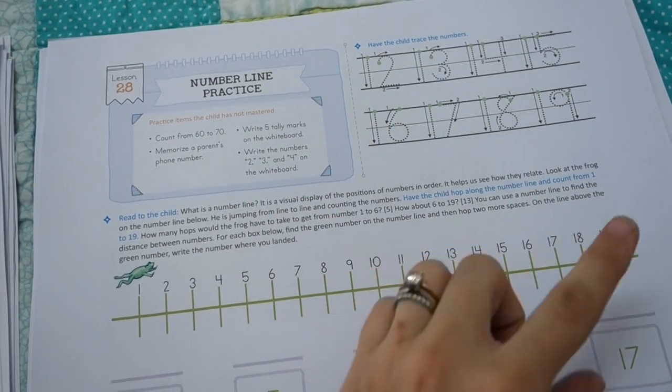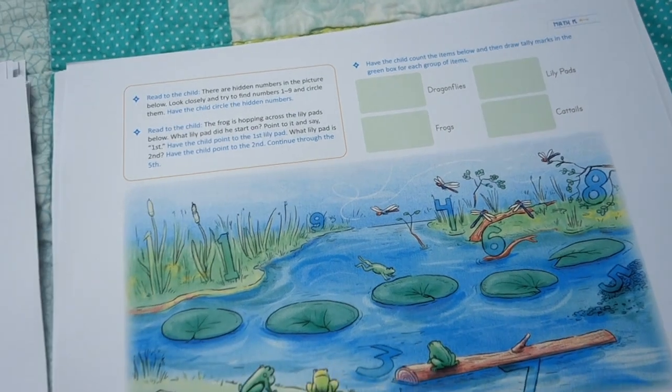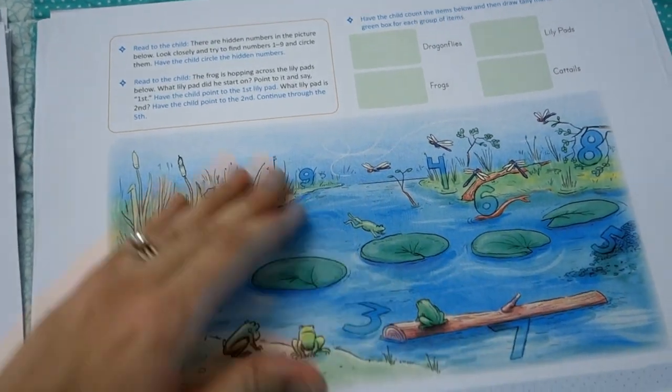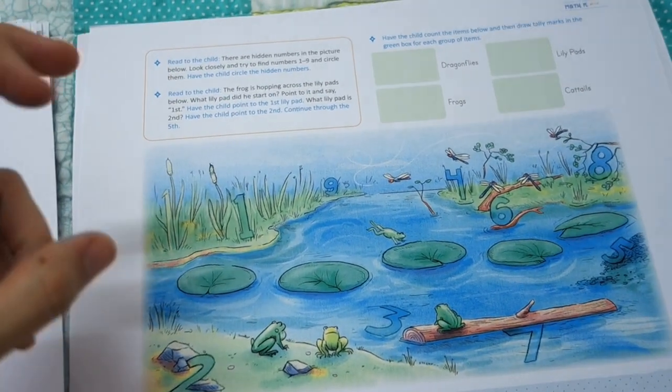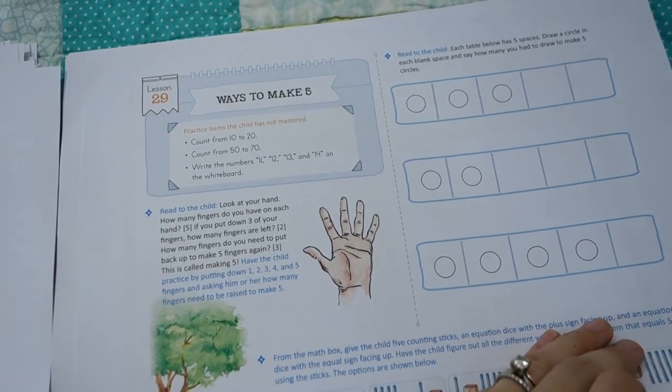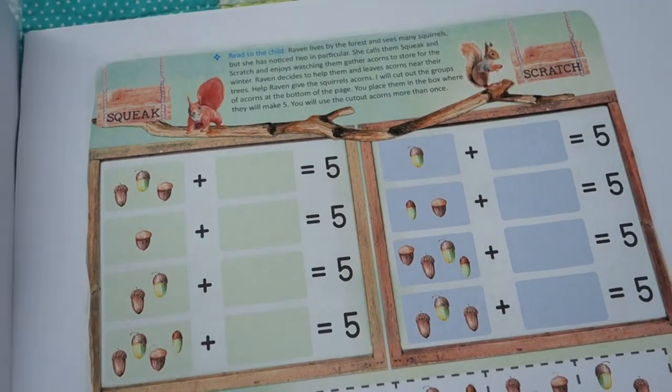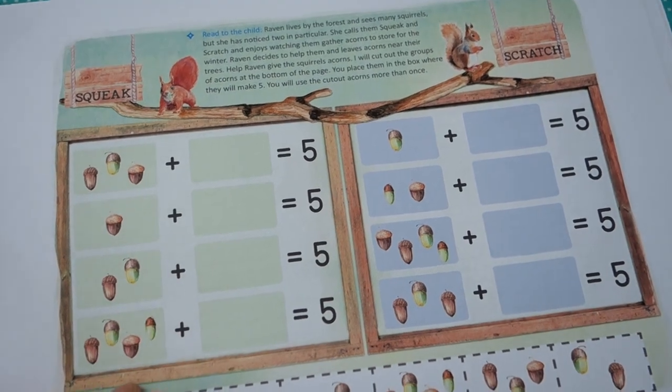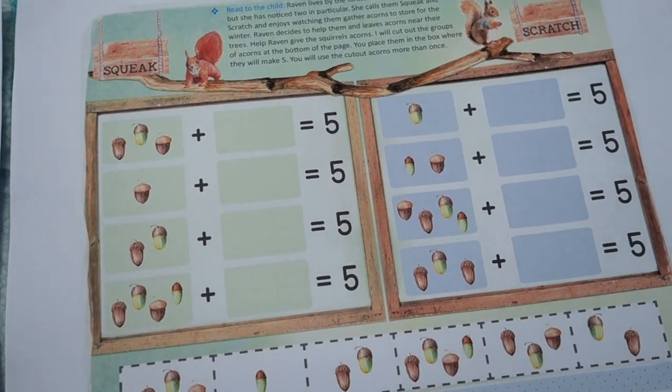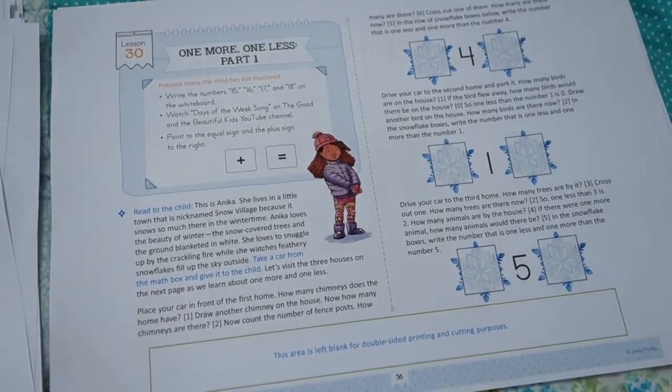What my son really likes about this is there's a lot more number writing. There has not yet been much number writing in Math-U-See, and there's a lot of what he calls maps, which are usually pictures that do tend to look like kind of maps. There's roads or paths or scenes on them. He loves that quite a bit. And of course, all the addition. He loves addition. So that is what you can expect.